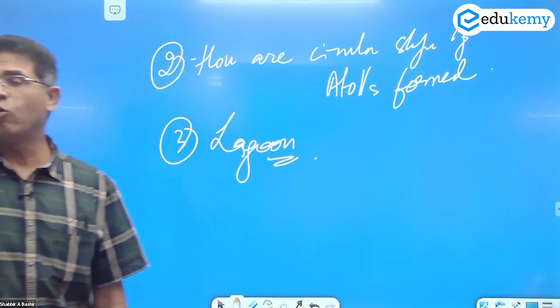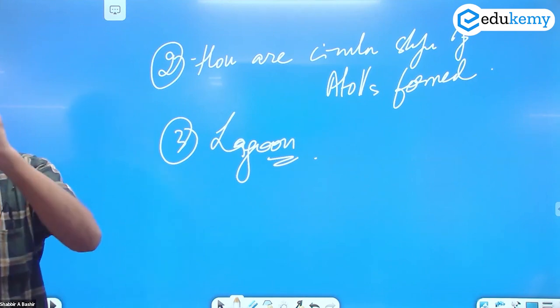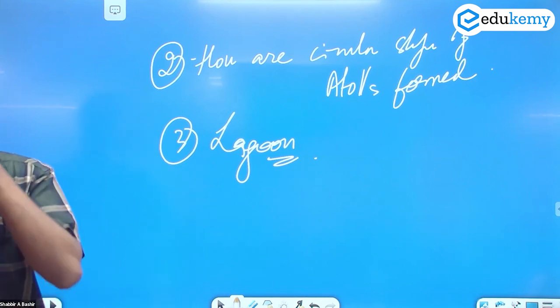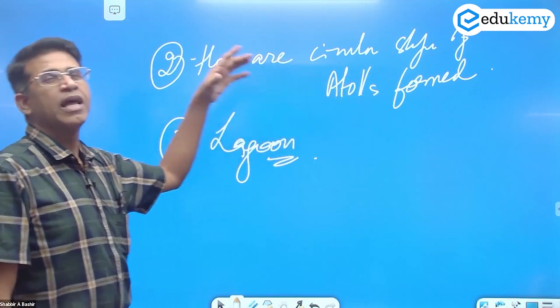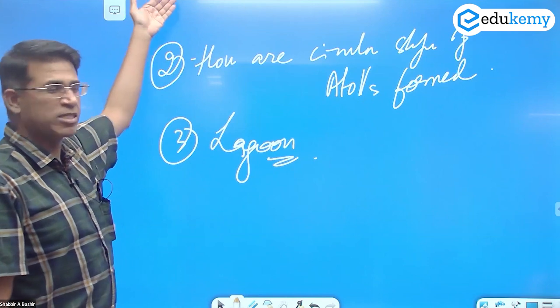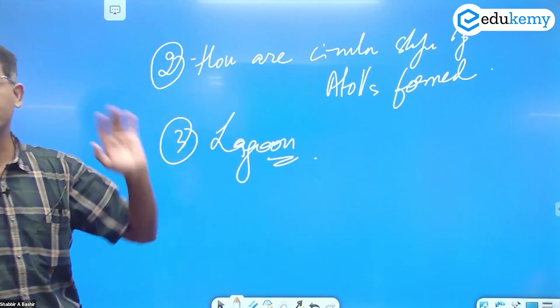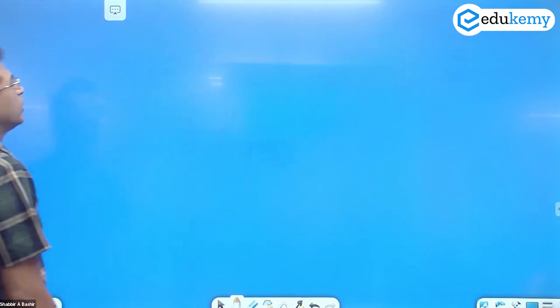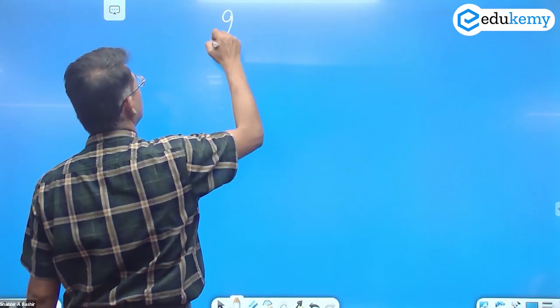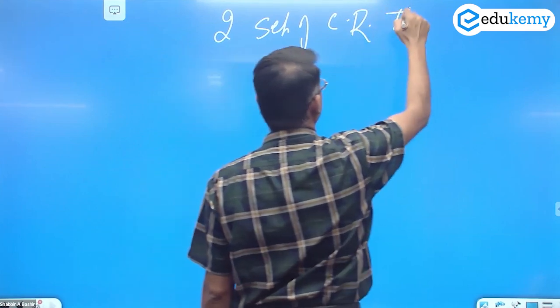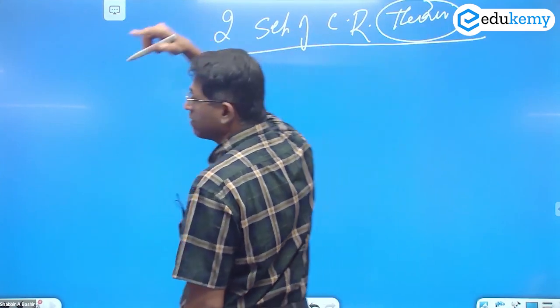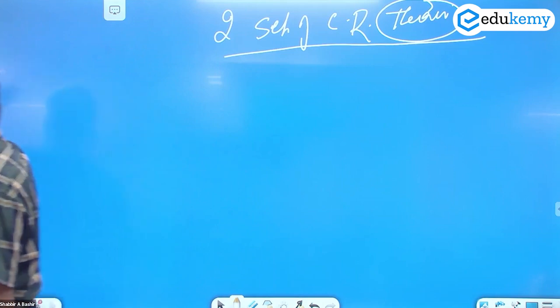How are the circular shapes of atolls formed, and the lagoon mystery? You can add a third one called the lagoon mystery. Now, the coral reef theories—there are two sets of coral reef theories. They explain the above mysteries: why are they thick, why atolls are circular, how are the lagoons formed?